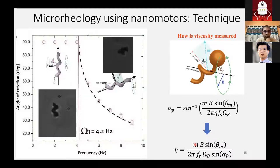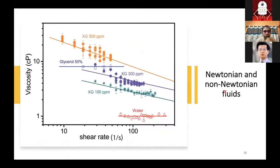This equation is done for Newtonian fluids. We tried to do the same thing in non-Newtonian fluids, and we saw that the results from the nanomotors match the bulk rheometer. The lines are from bulk rheometry and the points are from nanomotors. We can see that nanomotors can measure shear thinning property of xanthan gum, and also the properties of Newtonian fluids like glycerol and water.